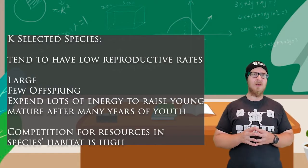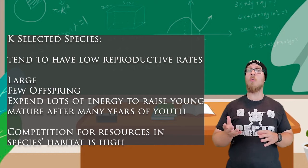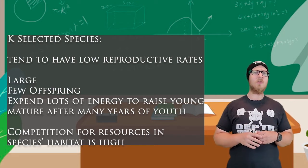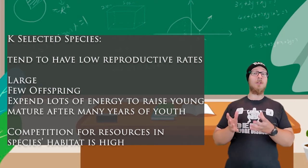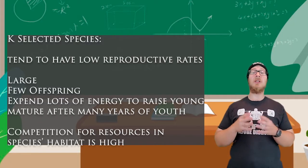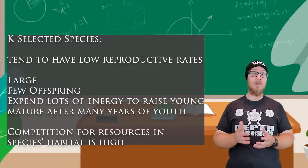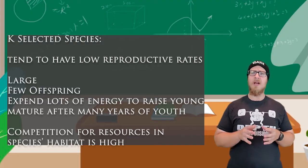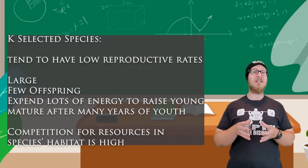K-selected species are ones that tend to have low reproductive rates. These organisms tend to be relatively large, have few offspring, expend a lot of energy when raising their offspring, and mature after many years of an extended youth.